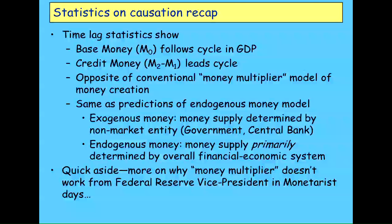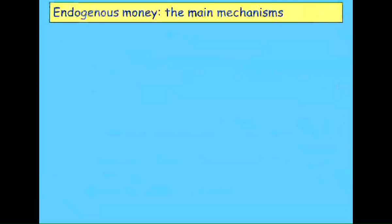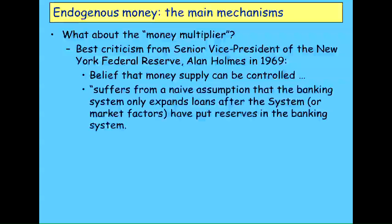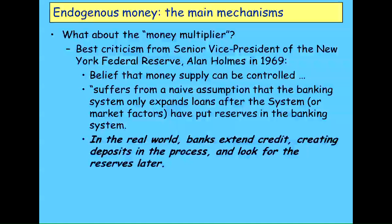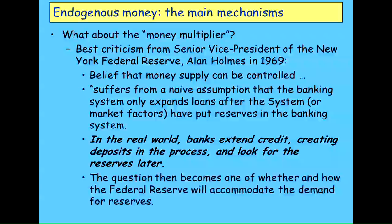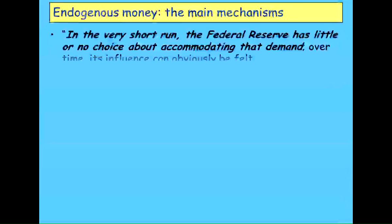This is a bit more on why the money multiplier doesn't work, written by a man who was then Vice President of the Federal Reserve in New York, back in the days when monetarism was becoming dominant. He had to fend off people who were saying you should be trying to control the money supply — thinking it was easy to do. He said the belief that you can control it is based on a naive assumption: that the banking sector only expands loans after reserves are put into the system. He says, in the real world, banks extend credit, creating deposits in the process, and look for the reserves later.